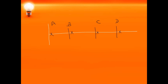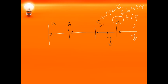Now how should the circuit breakers operate? Suppose a fault occurs beyond D — somewhere here — then the circuit breaker at D has to trip. The circuit breaker at D has to trip. In case the circuit breaker at D fails to trip, then the circuit breaker at C has to operate. That means circuit breaker C operates as a backup protective scheme. Likewise, if a fault occurs anywhere between C and D, then the circuit breaker at C will act as the primary circuit breaker.